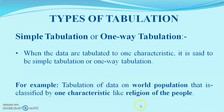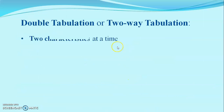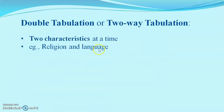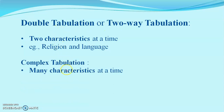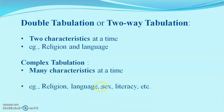An example of one-way tabulation is the tabulation of world population data classified by only one characteristic — religion. If based on two characteristics, for example religion and language, it is called two-way tabulation or double tabulation. If based on many characteristics at a time — such as religion, language, sex, and others — it is called complex tabulation.